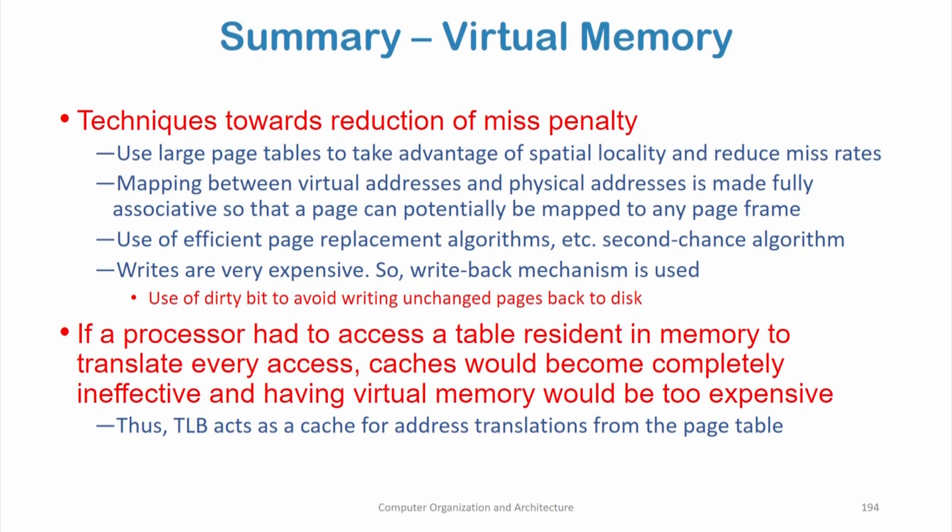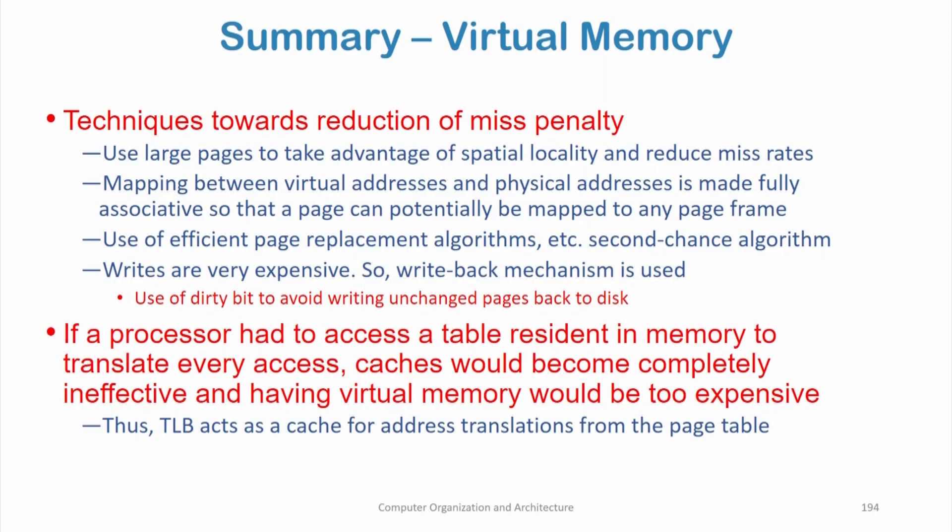We use large pages to take advantage of spatial locality and reduce miss rates. Page sizes are on the order of 4 KB, 8 KB, or even larger. Mapping between virtual addresses to physical addresses is made fully associative, so that a page can potentially be mapped to any page frame in main memory. This full associativity works here because misses are much more rare due to higher locality.